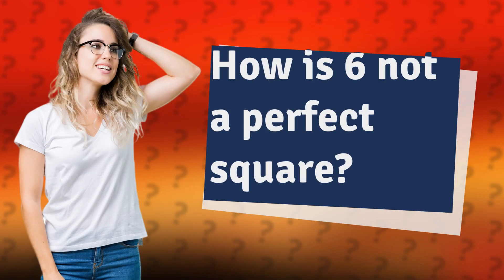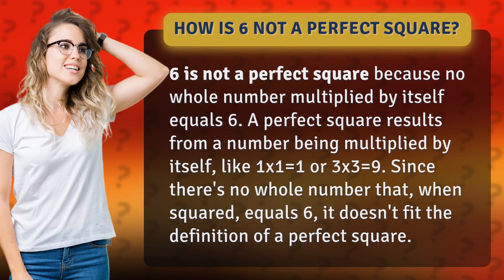How is 6 not a perfect square? 6 is not a perfect square because no whole number multiplied by itself equals 6. A perfect square results from a number being multiplied by itself, like 1 times 1 equals 1 or 3 times 3 equals 9. Since there's no whole number that, when squared, equals 6, it doesn't fit the definition of a perfect square.